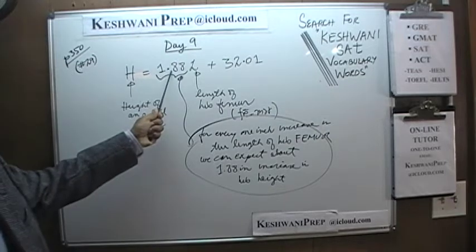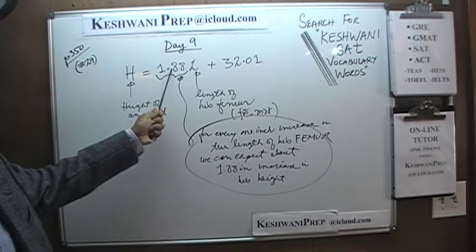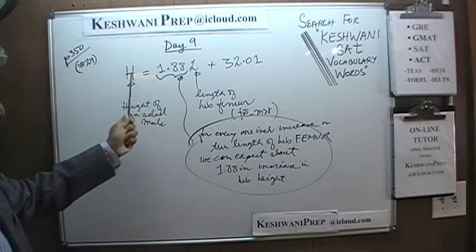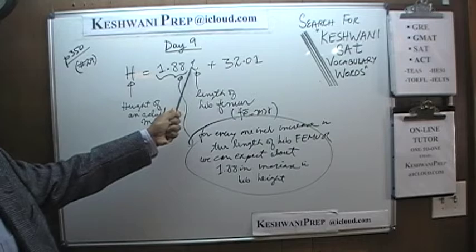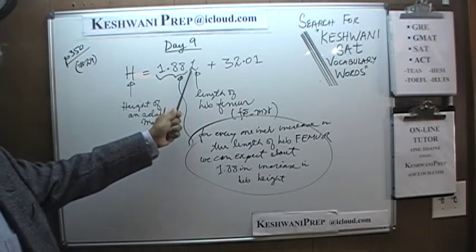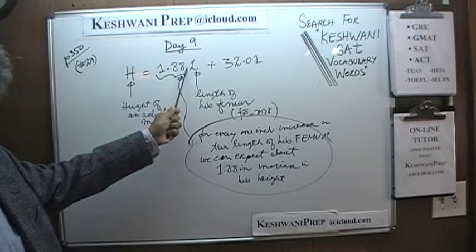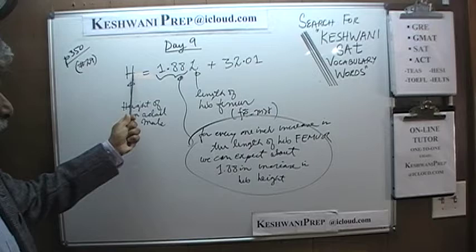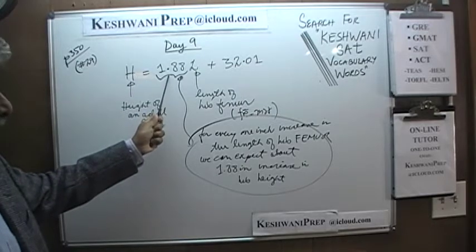That is the slope of the line — 1.88. It simply tells us that every time L goes up by 1, H will go up by 1.88. Whatever the unit happens to be, in this case it is the inch. Therefore, every time the length of the femur goes up by 1 inch, we can expect the height of the adult male to go up by about 1.88 inches to be precise.